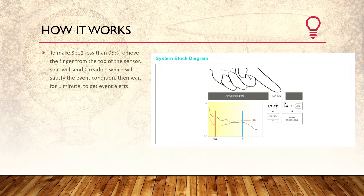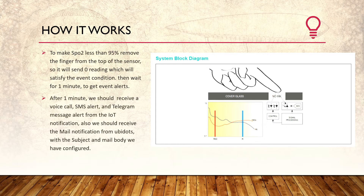How it works: to make SPO2 less than 95%, remove the finger from the top of the sensor, so it will send a 0 reading, which will satisfy the event condition. Then wait for 1 minute to get the event alert. After 1 minute, we should receive a voice call, SMS alert, and Telegram message alert from the IoT notification. We should also receive a mail notification from ubiquitous, with the subject and mail body we have configured.